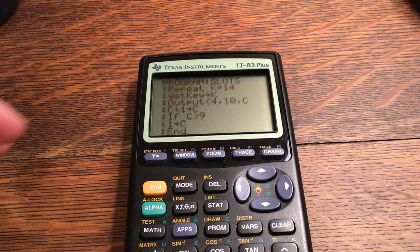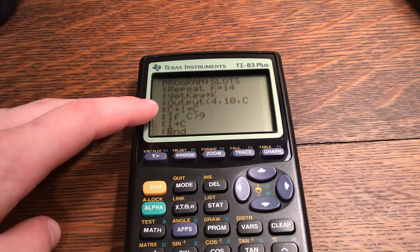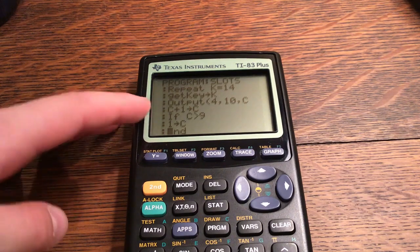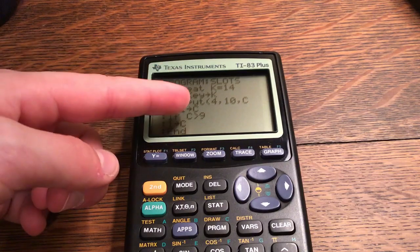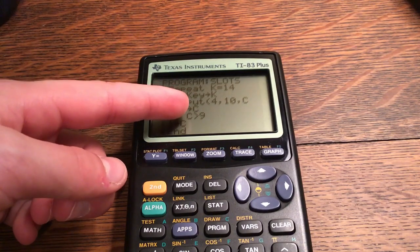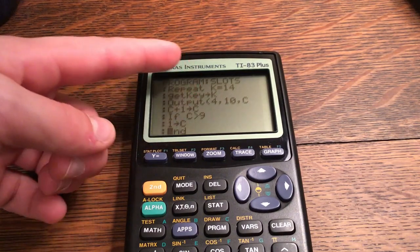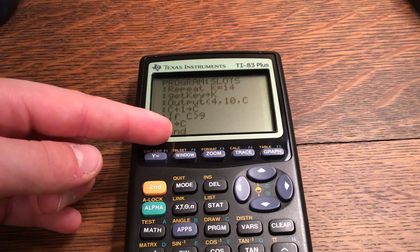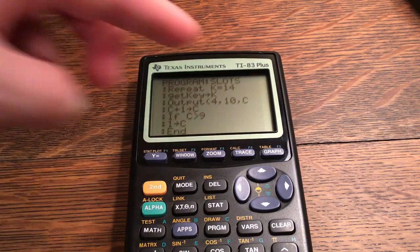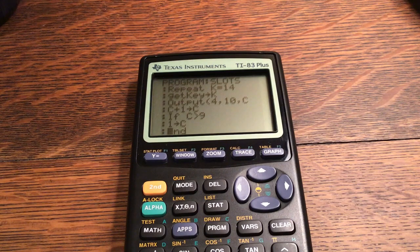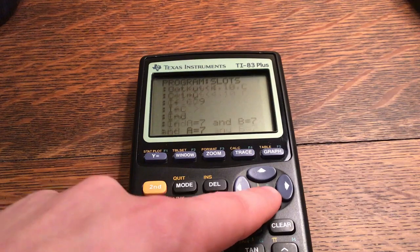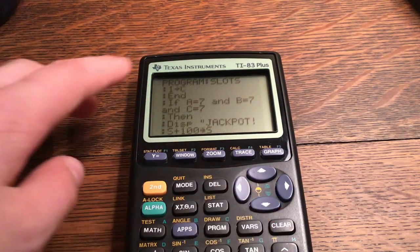Repeat until K is equal to 14. Get key stored to K. Output four comma ten comma C. C plus one stored to C. If C is greater than nine, one stored to C. Basically what the if C is greater than nine does is if the number up here is greater than nine, it'll automatically go down to one so it can't go to like 10 million, because otherwise it would not recycle.